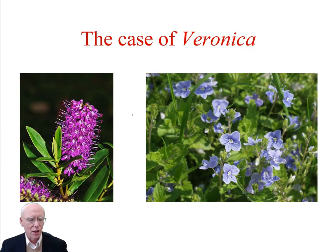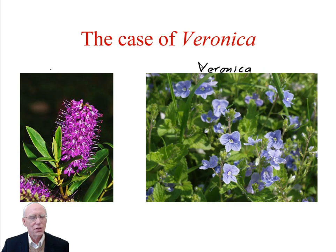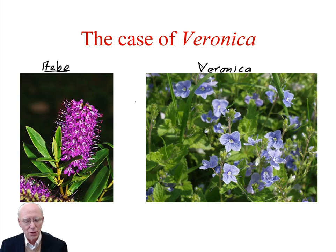Let's look at another example — the case of Veronica. Here are two very different-looking plants. The one on the right has traditionally been called Veronica. The one on the left is an Australian and New Zealand plant that has traditionally been called Hebe. Hebe is a very famous genus in Australia and New Zealand, grown in gardens everywhere across those countries — a very attractive plant that pretty much every gardener knows.